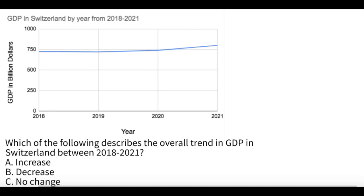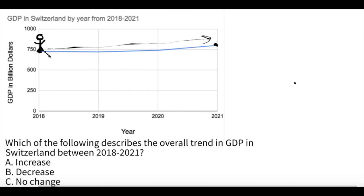Which of the following describes the overall trend in GDP in Switzerland between 2018 and 2021? A, increase. B, decrease. Or C, no change. For questions like this, imagine a stick figure person starting at the leftmost part of the graph and following the line as if it's a path or hill. Eventually they end at a spot higher than the start, which tells us there's an increase. If you can just look at the graph and see the line, that's faster, but the stick figure method helps beginners understand these graphs. The answer is A, increase.